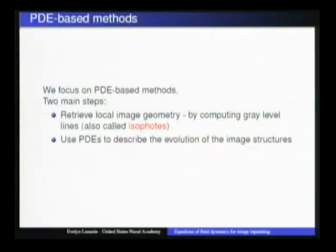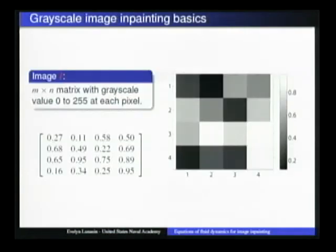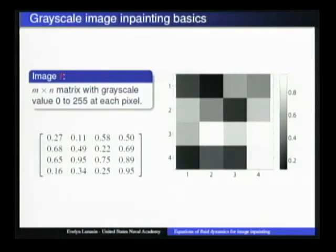Focusing on PDE-based methods, the two main steps are: retrieve the local image geometry by computing the gray level lines — also called isophotes — and then use PDEs to evolve these image structures. The image is an M by N matrix of pixels with intensity values from 0 to 255 (normalized to 0–1). Isophotes are lines of constant intensity within an image; since the gradient vector gives the direction of highest increase, the isophote direction is obtained by rotating the gradient 90 degrees.